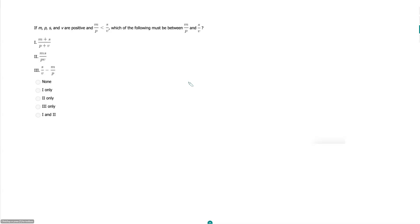If m, p, s, and v are positive and m over p is less than s over v, which of the following must be between m over p and s over v? And then we have one of these three-in-one type questions.